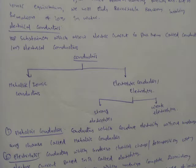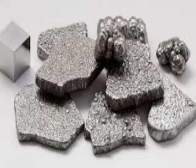Coming to metallic conductors — these are substances which are able to conduct electricity without undergoing any chemical change. The best examples of metallic conductors are iron and aluminium.